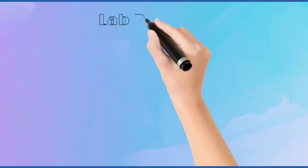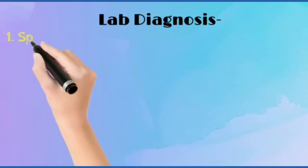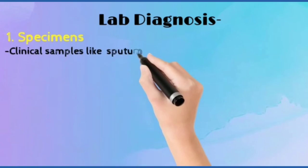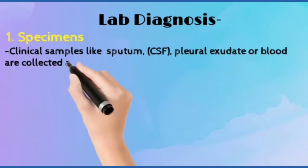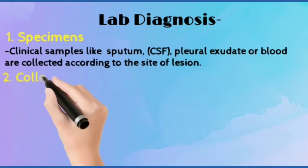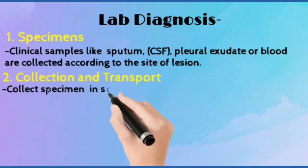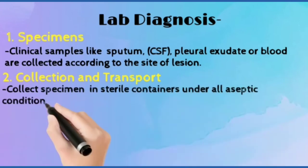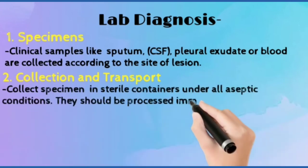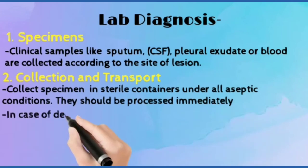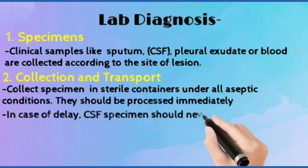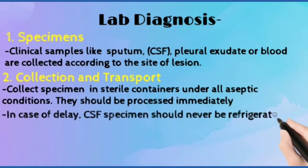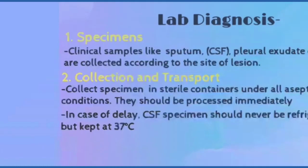Lab diagnosis: For specimen collection, we collect samples like sputum, CSF, pleural exudate, or blood according to the site of lesion. Specimens are collected and transported in sterile containers. In case of delay, the CSF specimen should never be refrigerated but kept at 37 degrees Celsius.